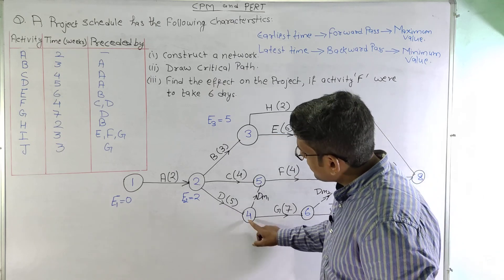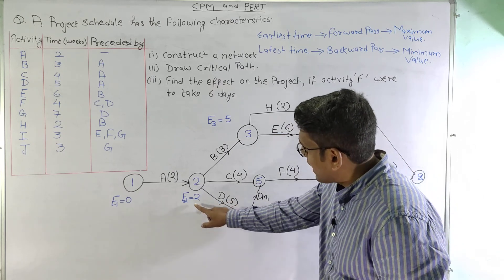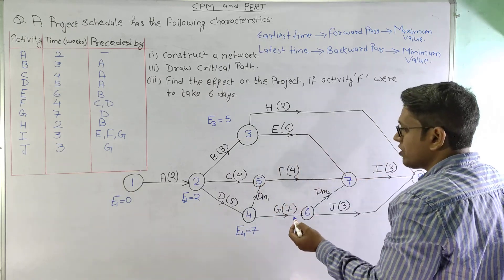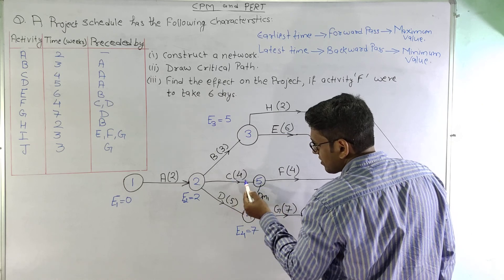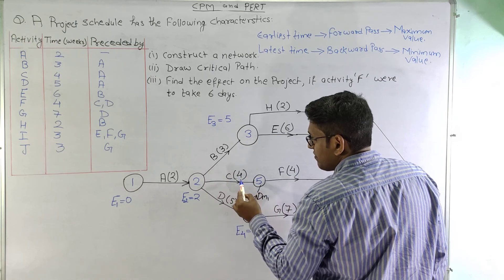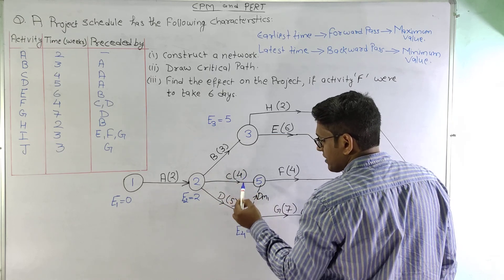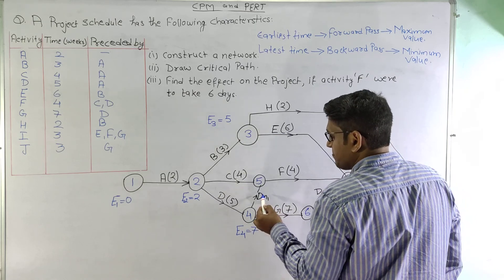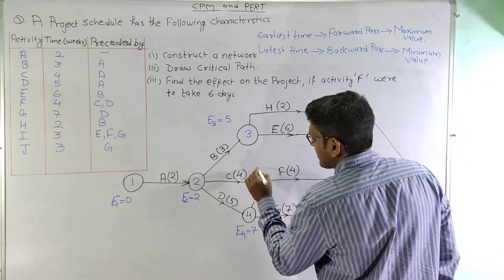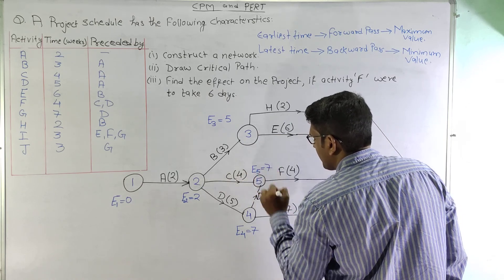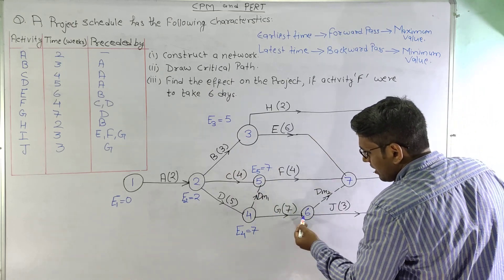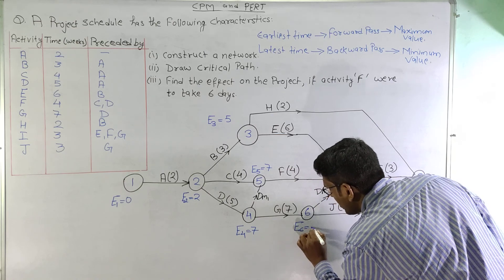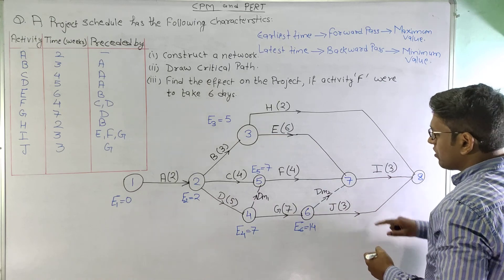At node 5, two activities are coming in. From the C-path: 2 + 4 = 6. From the D-path via dummy: 7 + 0 = 7. We select the maximum, so E5 = 7. At node 6, a single activity is coming in: 7 + 7 = 14, so E6 = 14.